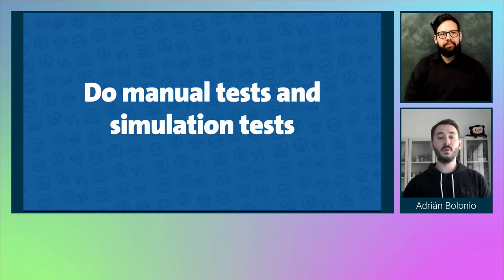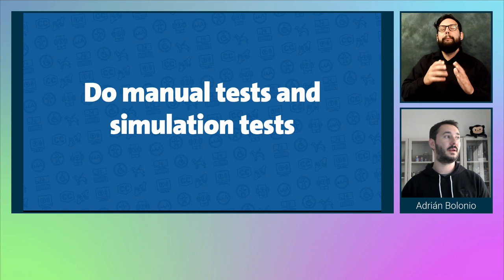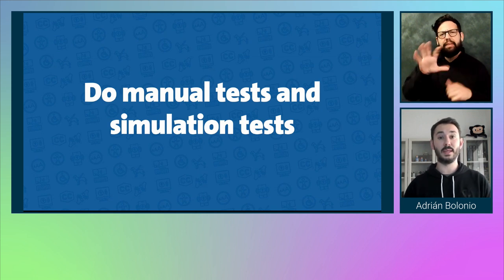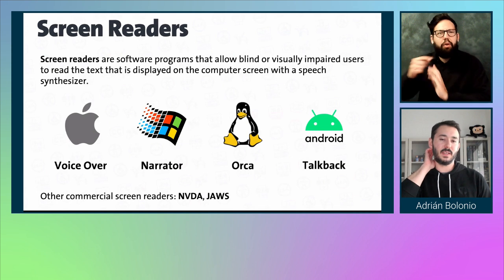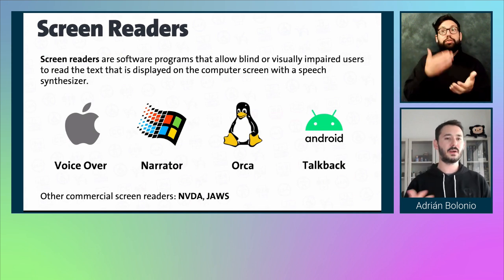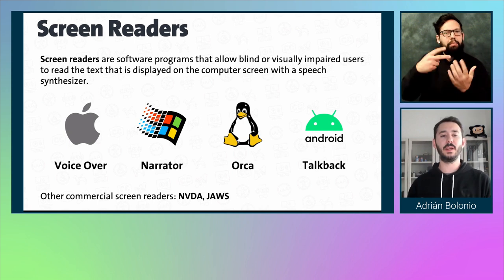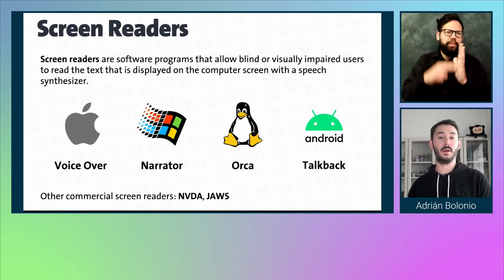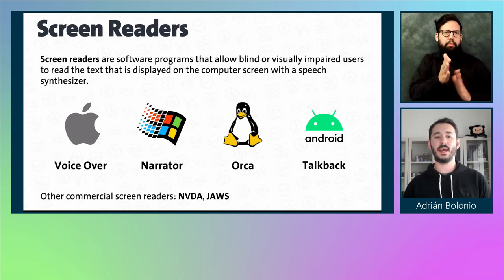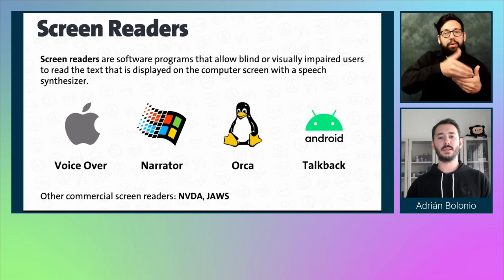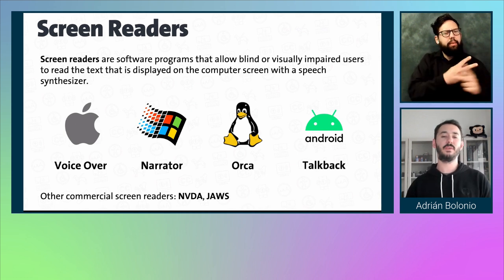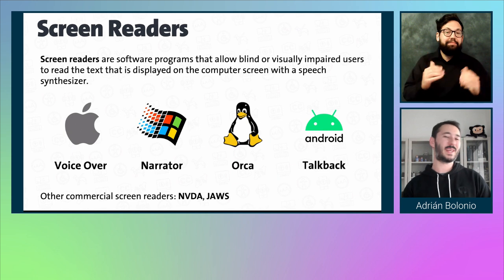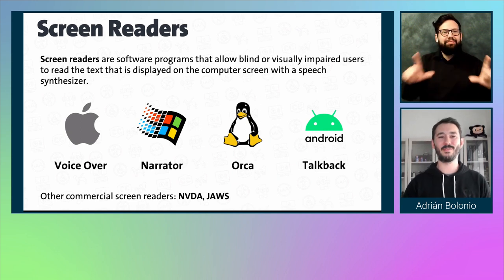My last recommendation is to do manual and simulation tests. We discussed that only 20 to 50 percent of issues can be detected with automated tests. The first thing to consider is screen readers — software programs that allow visually impaired users to read text displayed on screen. Every operating system has a built-in screen reader: Apple iOS and Mac have VoiceOver, Windows has Narrator, Linux has Orca, and Android has TalkBack. Commercial screen readers include NVDA and JAWS. For the sake of time, I won't cover screen readers in depth, but I'll talk about browser extensions.